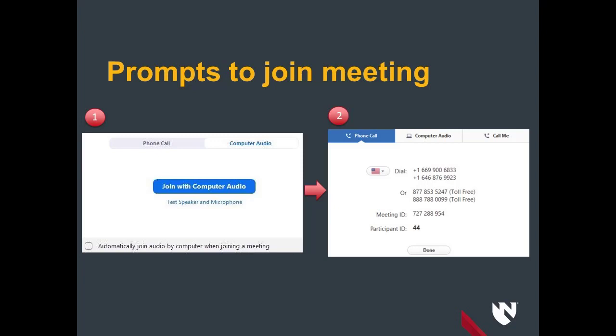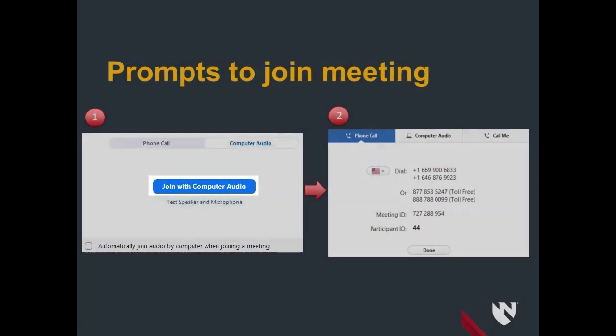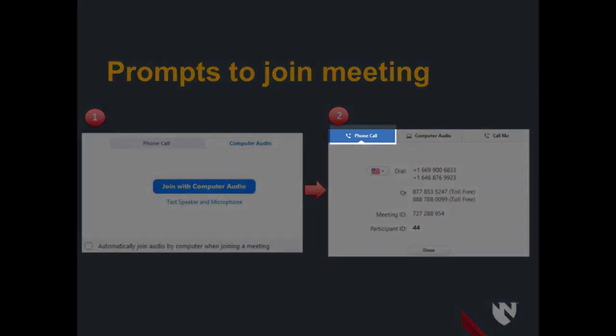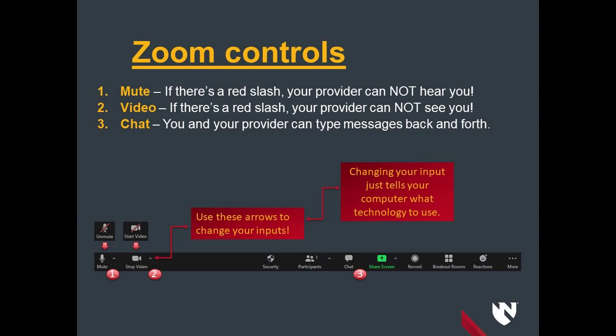Once the meeting begins, there may be a few prompts to get your technology in order. If your equipment is ready, you can select Join with Computer Audio. But if you would like to use a phone to call into the appointment, then select the Phone Call tab and dial any of the numbers given. Now that you're in your appointment, let's go over some important options within Zoom.